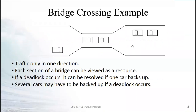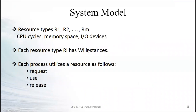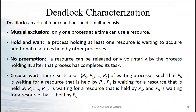We explained how deadlock occurs and learned basic terminologies. Mutual exclusion means only one process at a time can use a resource. Hold and wait means a process holding at least one resource is waiting to acquire additional resources held by other processes — for example, a process holding one keyboard waiting for a second keyboard. No preemption means a resource can be released only voluntarily.